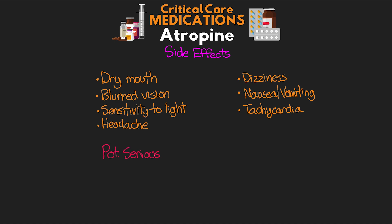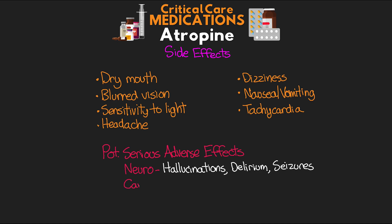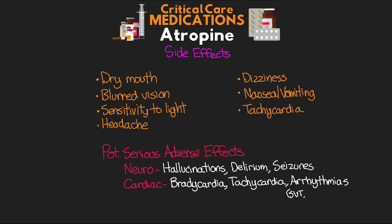Some potentially serious adverse effects by system: neurologically, we can see hallucinations, delirium, and seizures. For our cardiovascular system, we can actually see reflex bradycardia sometimes, tachycardia, and arrhythmias such as SVT, VT, and even V-fib. And then on the metabolic side, hypoglycemia and hypokalemia are also potential adverse effects.